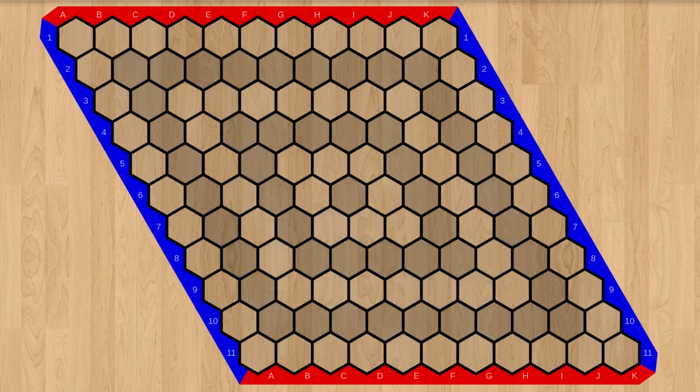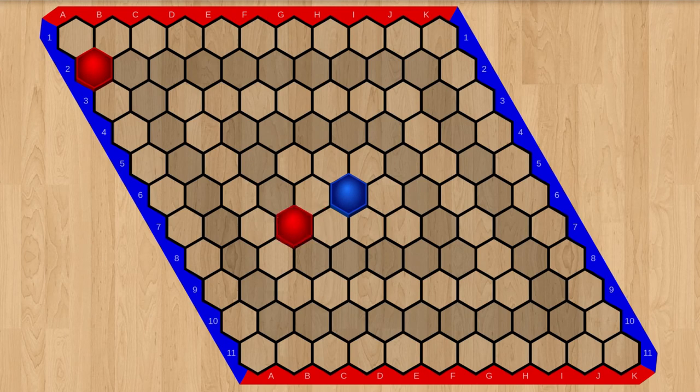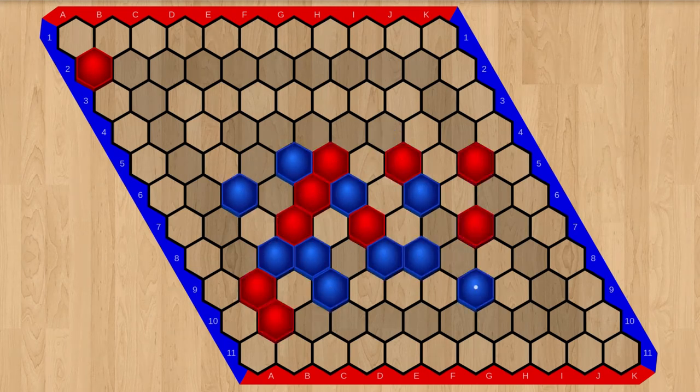The players take turns placing a stone on an empty cell anywhere on the board. Red goes first. Once placed, stones are never moved or taken away.